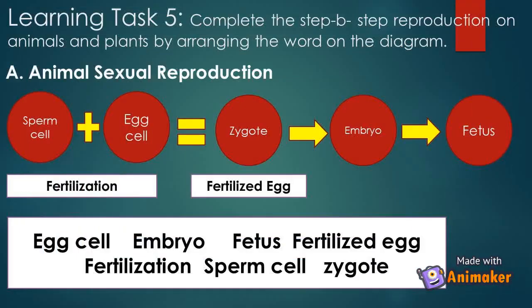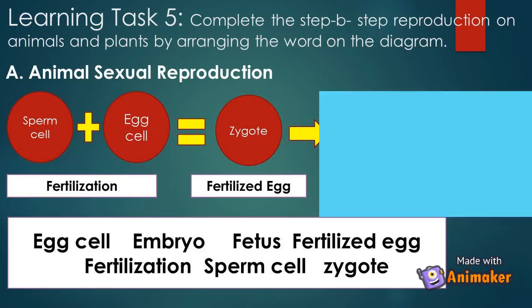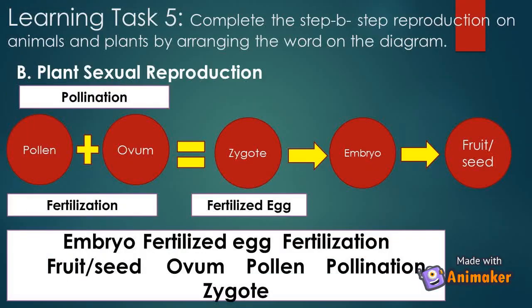Learning task five: complete the steps in sexual reproduction in animals and plants by arranging the words on the diagram. In animal sexual reproduction, fertilization happens when egg cell and sperm cell unite to produce a fertilized egg called a zygote, which develops to become an embryo and turns into a fetus. In sexual reproduction in plants, during pollination the pollen grains are transferred from the anther to the stigma. Once the pollen unites with the ovum, fertilization happens. A fertilized egg is produced — the zygote — and as it develops it becomes an embryo and turns into fruits or seeds.